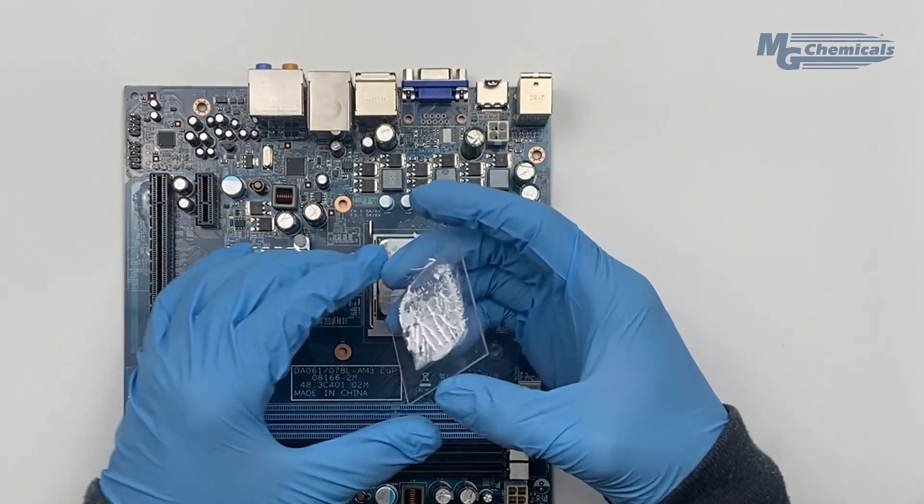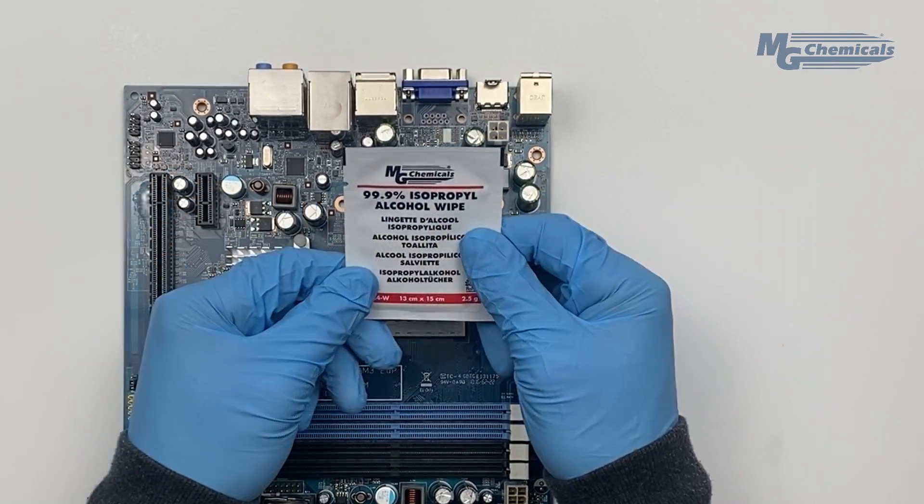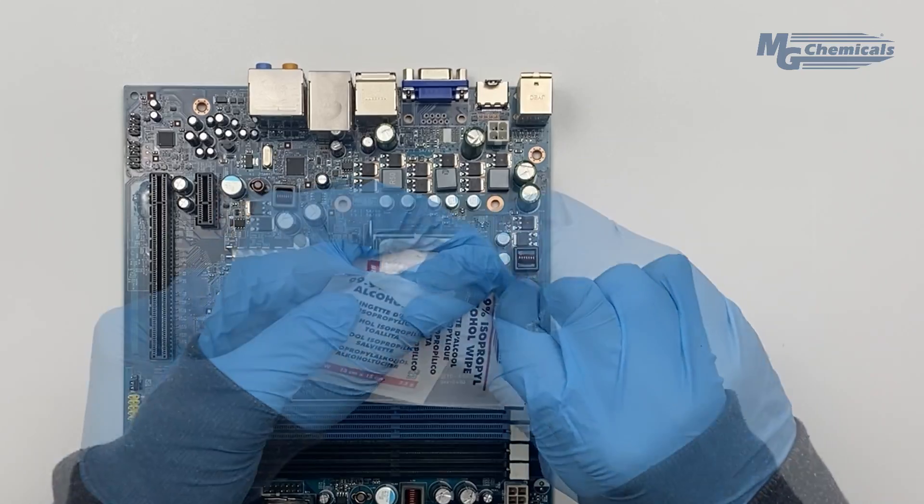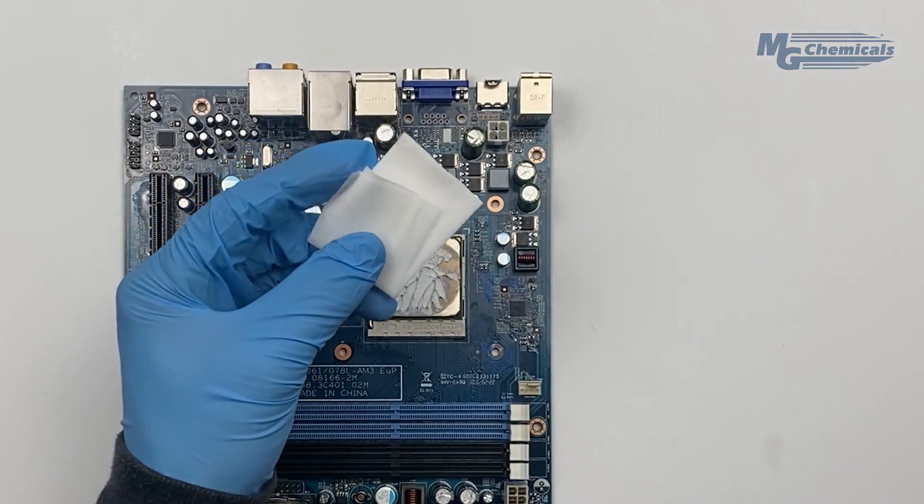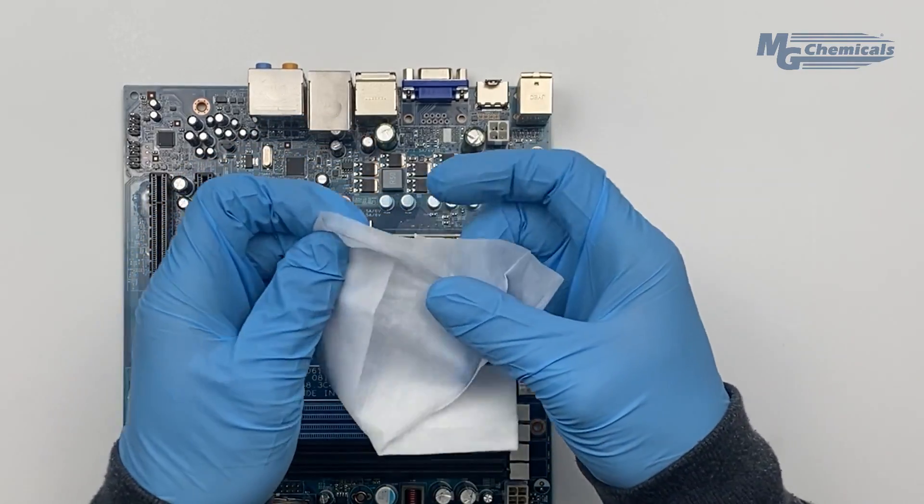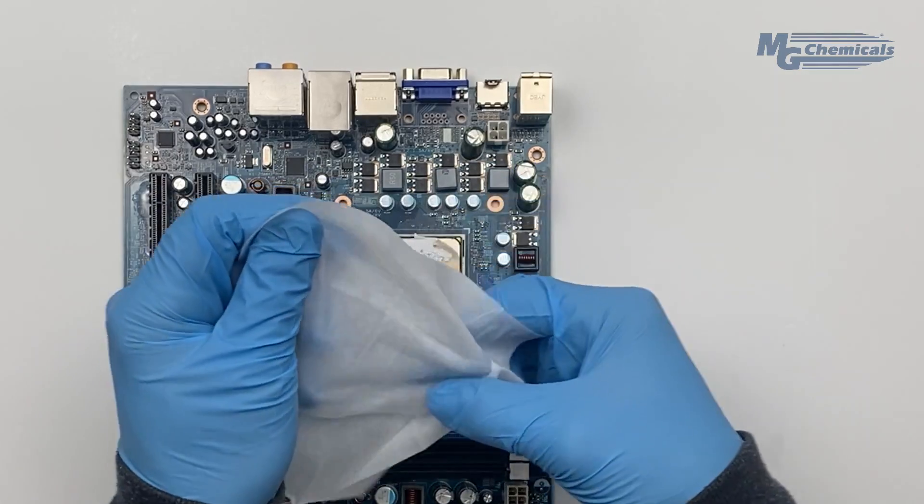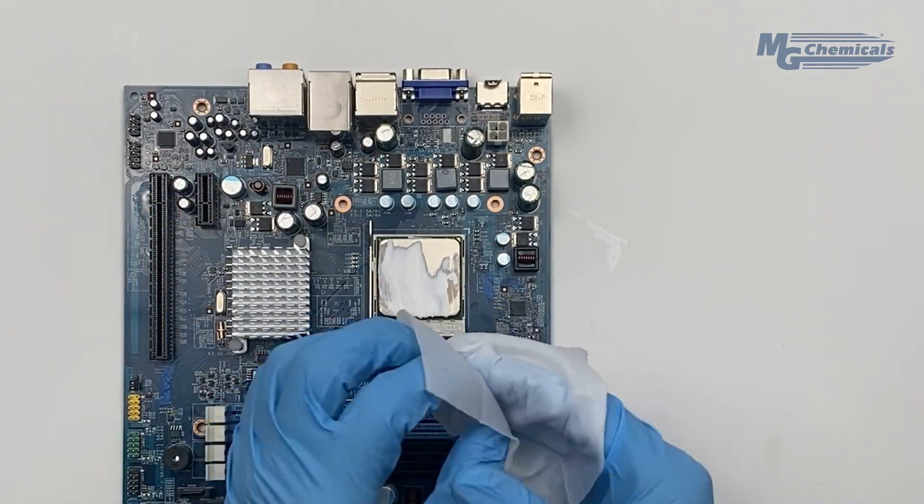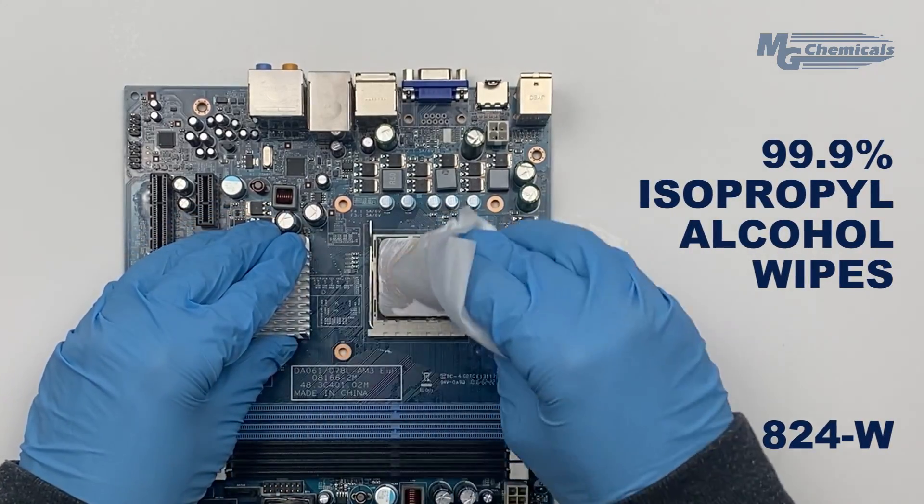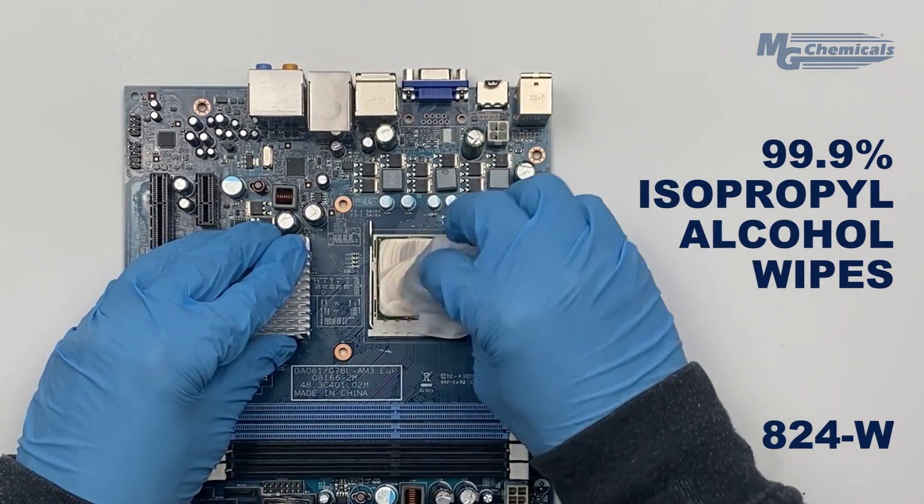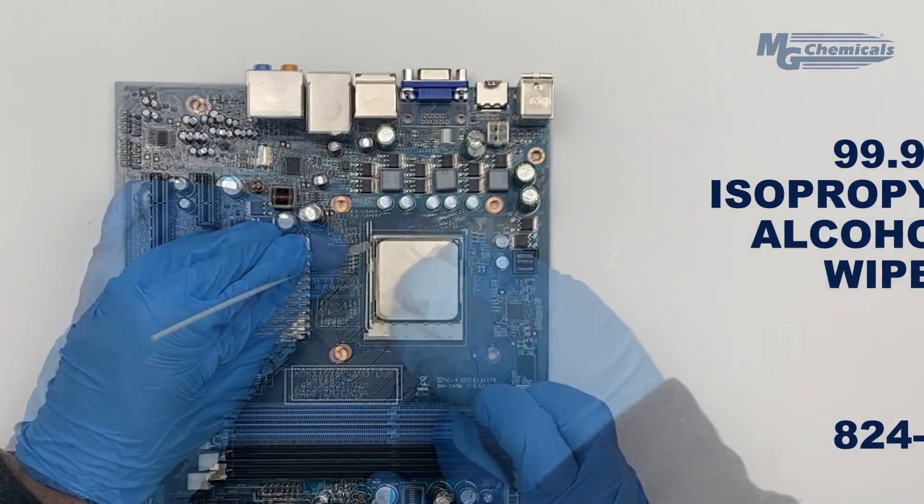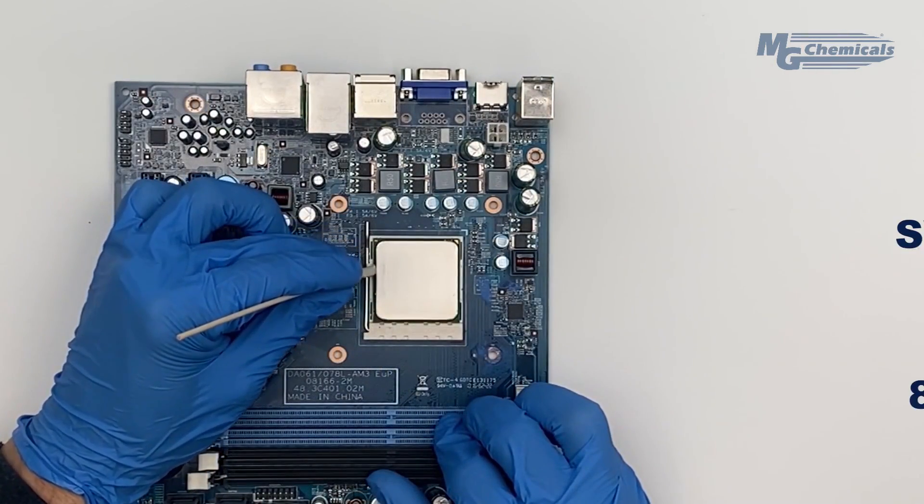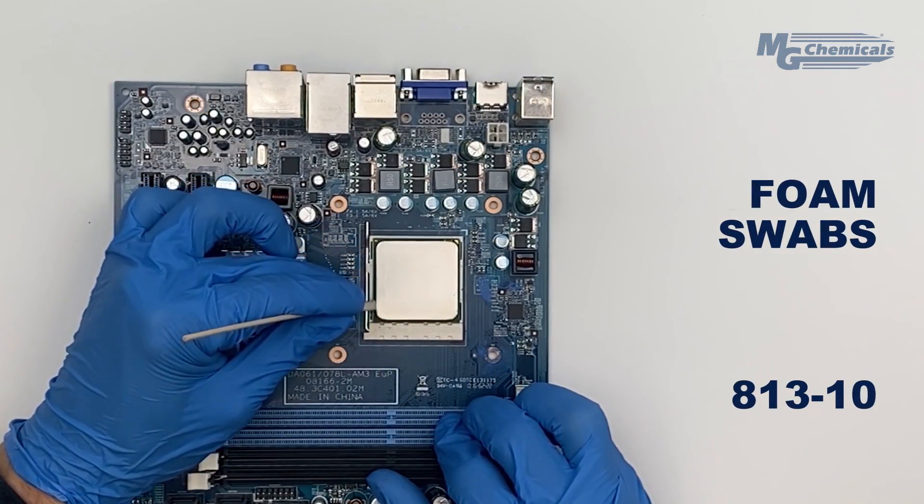Begin by removing the heat sink from the CPU. Next, remove any residual paste or grease with isopropyl alcohol and a lint-free paper cloth. MG Chemicals offers convenient pre-saturated wipes that work great to effectively remove most grease and paste residue. For edges and hard to reach areas, use a foam swab.